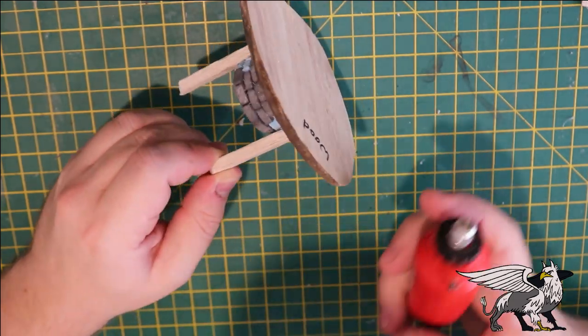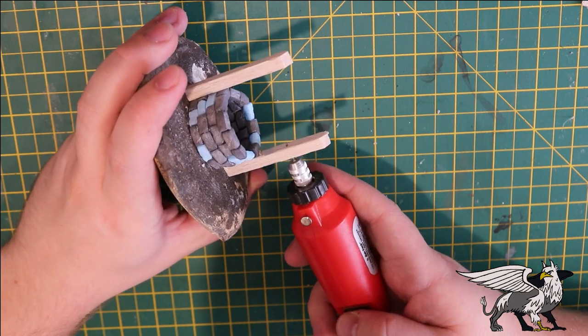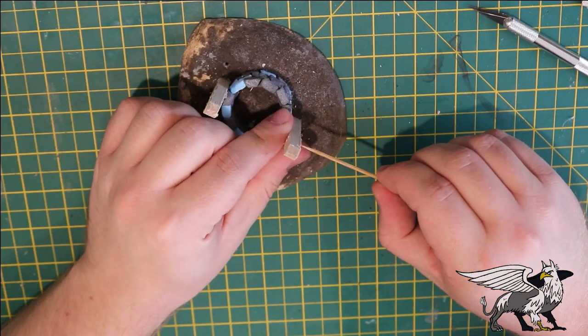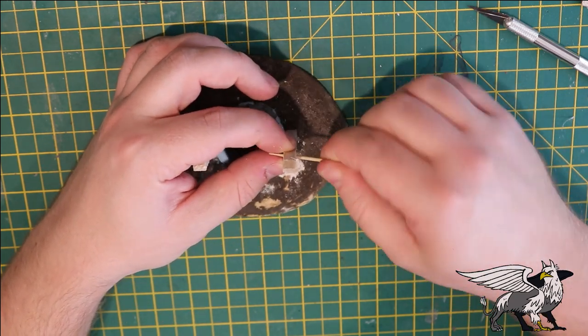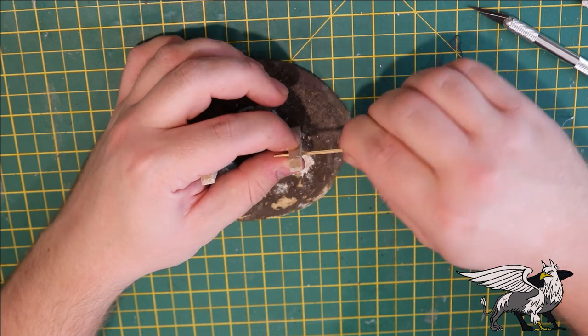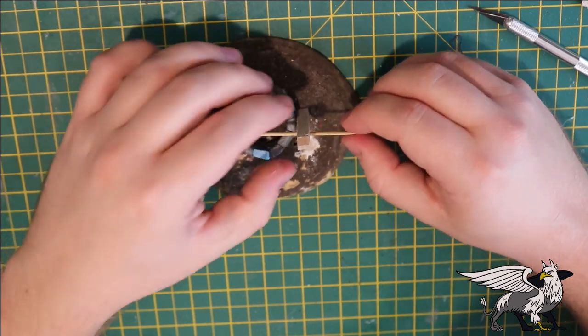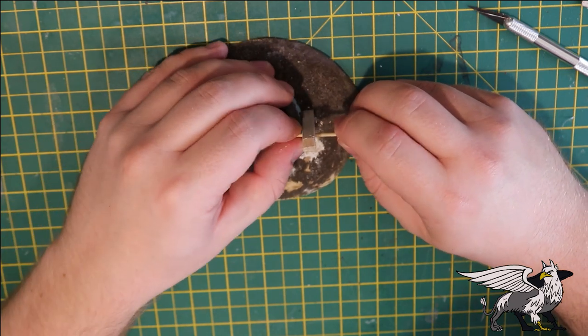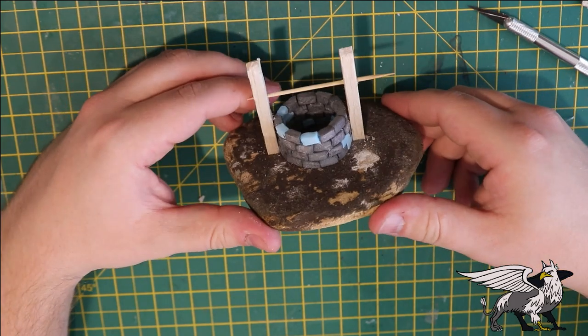Now I need to get a spindle through these planks of wood here, so I used a dremel to fire a hole through these posts, and then a cocktail stick or toothpick, just very carefully twisted it through the holes in both of the posts. This is going to be the spindle which our rope will be attached to.